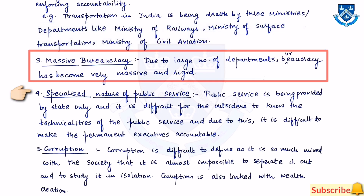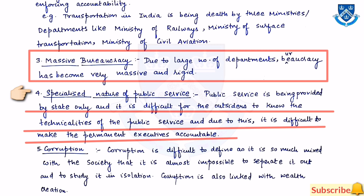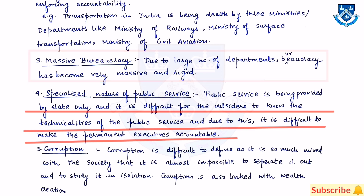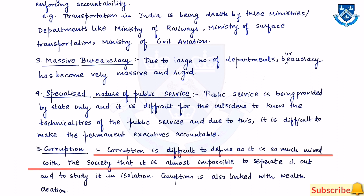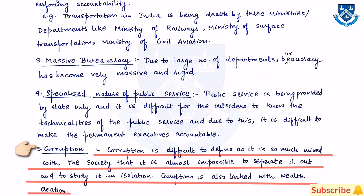The fourth problem is the specialized nature of public service. Public service is approved by the state only, and it is difficult for outsiders to know the technicalities of public service, making it difficult to hold permanent executives accountable. The last problem is corruption, which is difficult to define as it is so mixed with society that it is almost impossible to separate it out and study in isolation. Corruption is also linked with wealth creation.